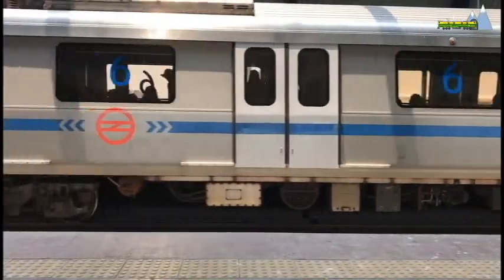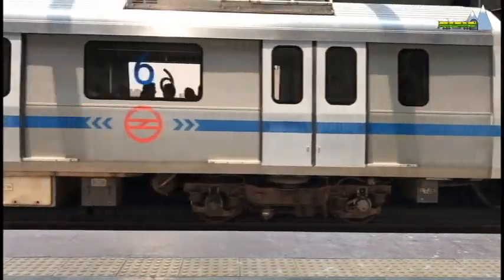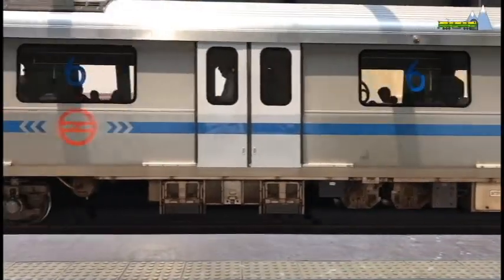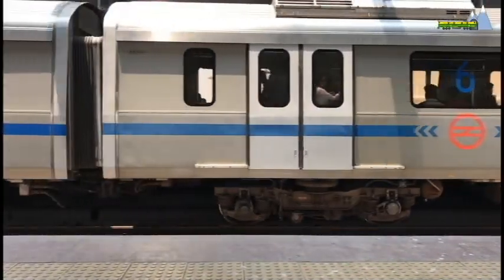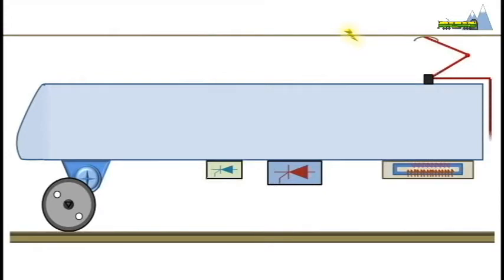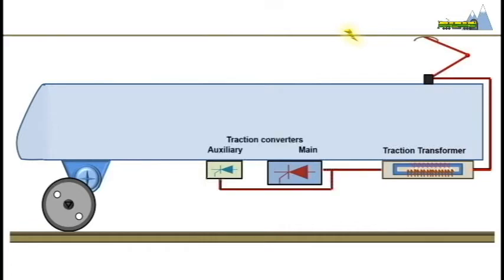Apart from the differences, transfer of traction power to the wheels in a multiple unit trainset is similar to that of a locomotive. Power collected from the pantograph is transferred to a traction transformer which sets the desired voltage. Power at the desired voltage is then passed through main and auxiliary traction converters. The traction converters convert the power to the type required by the traction motors, such as from AC to DC or single phase to three phase.